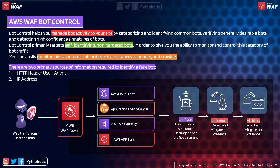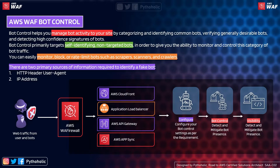When a request comes from a bot or a user, the first contact point before reaching the web application is WAF itself. Using WAF Bot Control, you can configure default settings to mitigate bots. Next, Bot Control detects the presence of bots. Third is visibility — once configured and detecting bots, you can control the flow and visualize and monitor bot control activity by creating custom dashboards in CloudWatch.